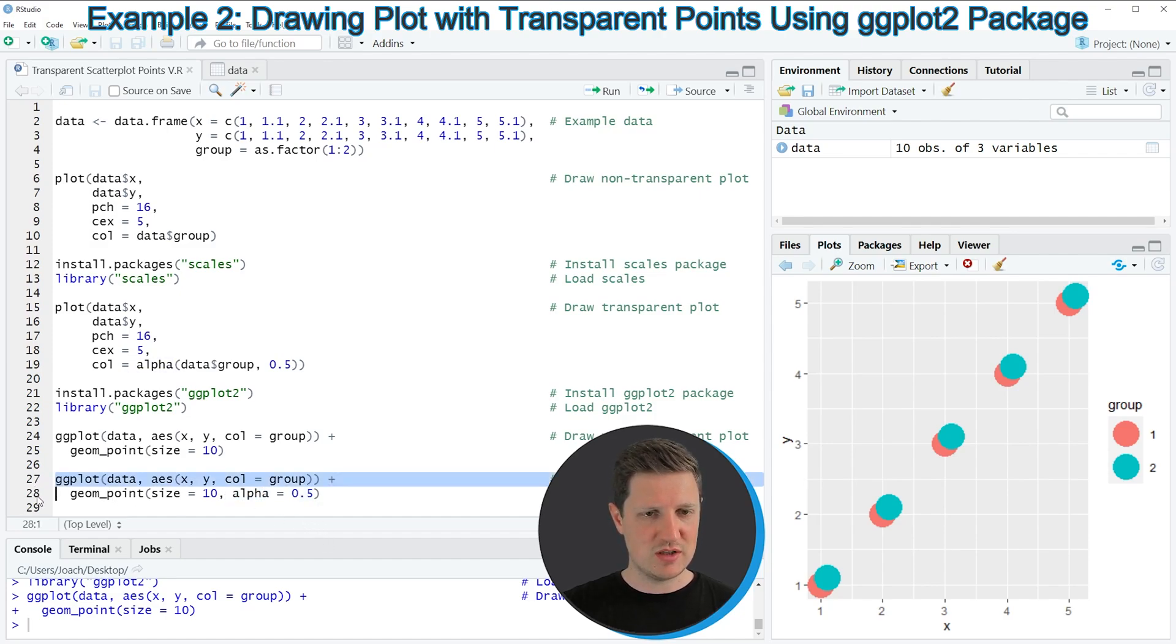So if you run lines 27 and 28 of the code, you can see that our plot is recreated, and this time our points are shown with a certain level of opacity.